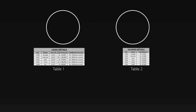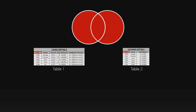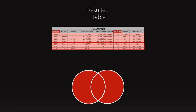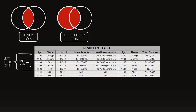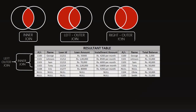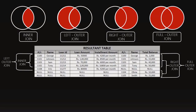Full outer join: first, the common data of all rows is shown, then the data of the left table not present in the right table, and then the data of the right table not present in the left table. Full outer join results in the same or more rows than the parent table and also increases the number of columns. To summarize: inner join gives common values; left join gives common values plus extra values of the left table; right join gives common values plus extra values of the right table; full outer join gives common values plus extra values of both left and right tables.